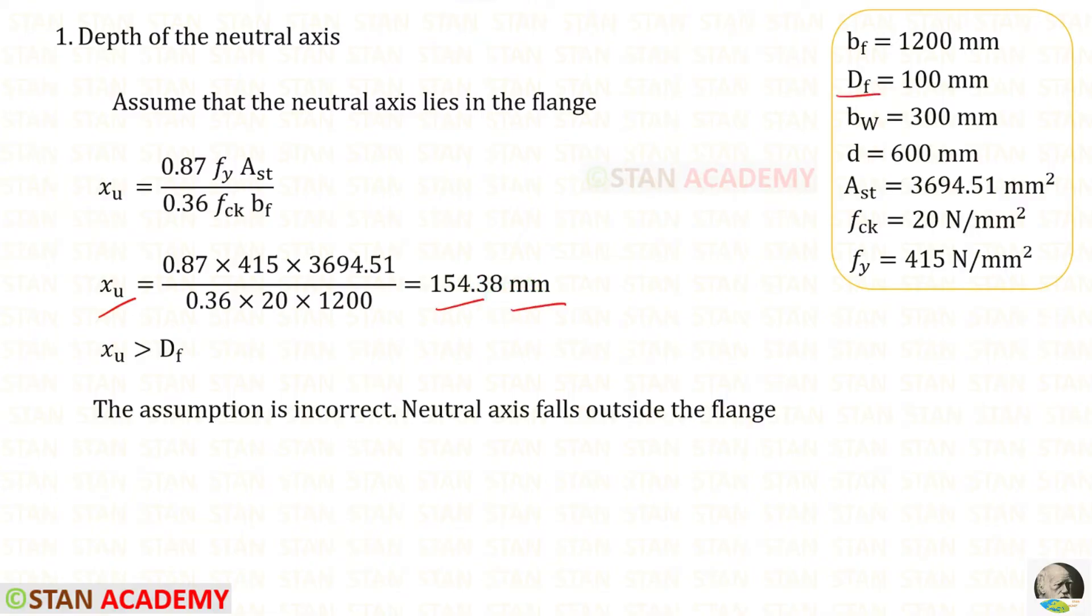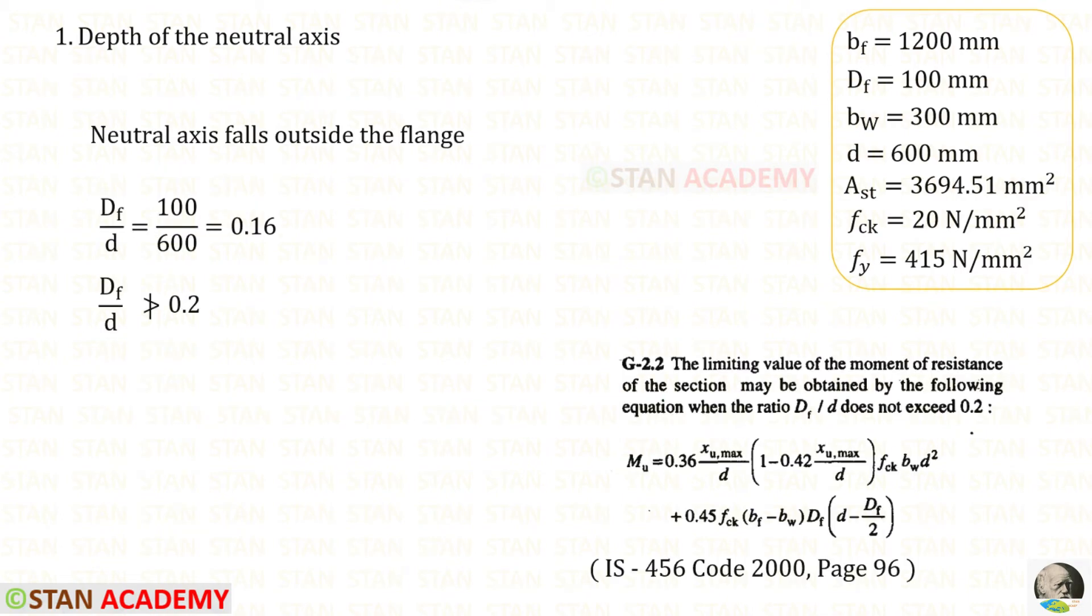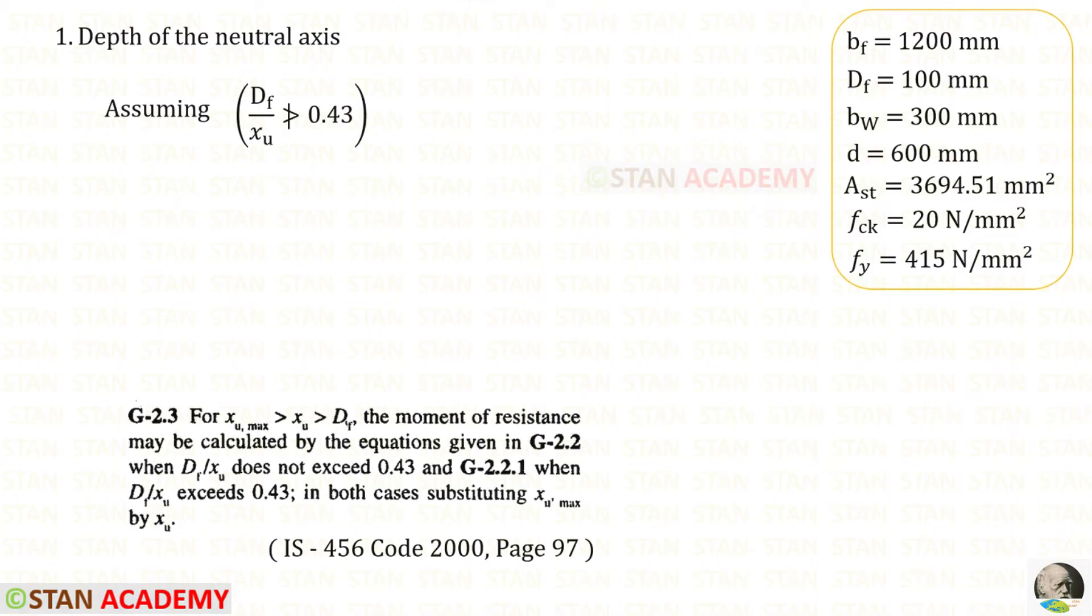The depth of the flange is 100 mm, so xu is greater than df. In this case the assumption is incorrect - the neutral axis falls outside the flange. Then we need to find whether df/d exceeds 0.2. For df/d we will get 0.16, so df/d does not exceed 0.2. The clause G2.3 states that...